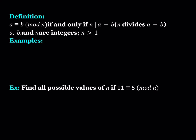For example, I can say 5 is congruent to 2 mod 3 because 3 divides 5 minus 2. Since 5 minus 2 is equal to 3 and it's divisible by 3. You can also state that n divides a minus b as: a minus b is a multiple of n, or write it as a minus b equals n times k where k is an integer.